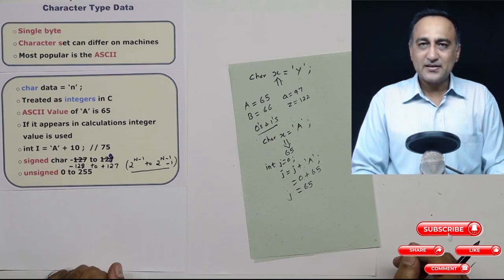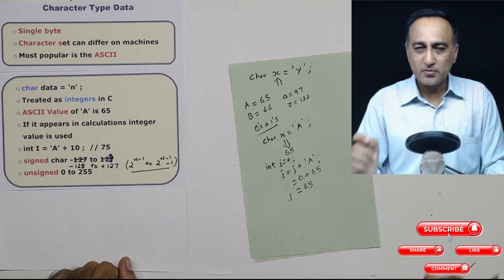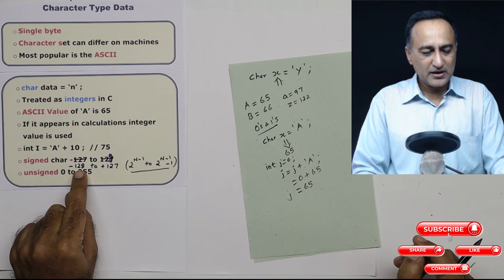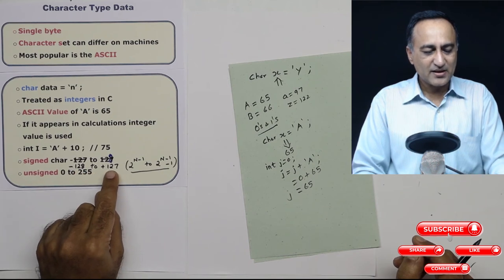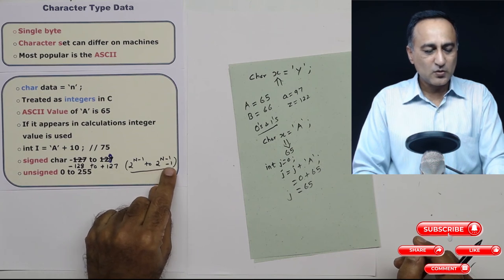If it's a signed type of a character, that means you have only seven bits available for you to represent because one is going to be the sign bit. So the range of a signed character is minus 128 to plus 127, given by this particular formula two raised to n minus one to two raised to n minus one minus one.